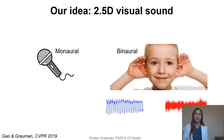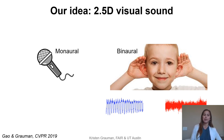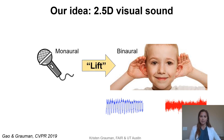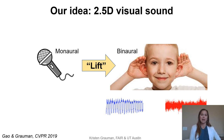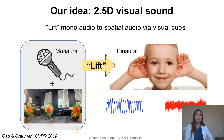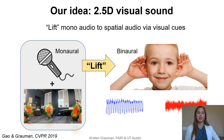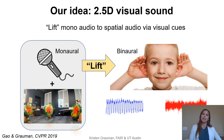So the idea we had was to introduce two-and-a-half-D visual sound. The goal is to take monaural audio as input and generate its binaural counterpart — in other words, to lift the mono sound into binaural sound such that it would sound spatially rich, as if the observer at the camera was hearing the sounds with two ears. The key ingredient for this lifting is the visual input, because we can learn from video that has monaural sound but also spatial information within the visual frame.